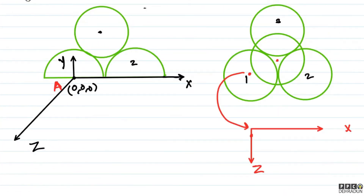So let's set up the question. Basically, here are three hemispheres such that the flat surfaces are on the ground. And here are three hemispheres of radii R, which is the same as the radius of the top sphere.